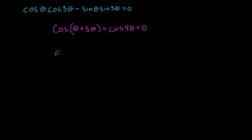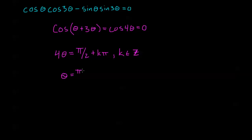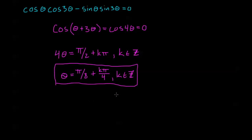Now we're solving cosine of 4θ = 0. Cosine equals 0 when 4θ is π/2 or 3π/2 plus 2kπ. We can write that more compactly as 4θ = π/2 + kπ, where k is an arbitrary integer — this captures all the y-axis angles. To finish, we divide by 4, giving θ = π/8 + kπ/4, where k is any integer. That's our general solution.